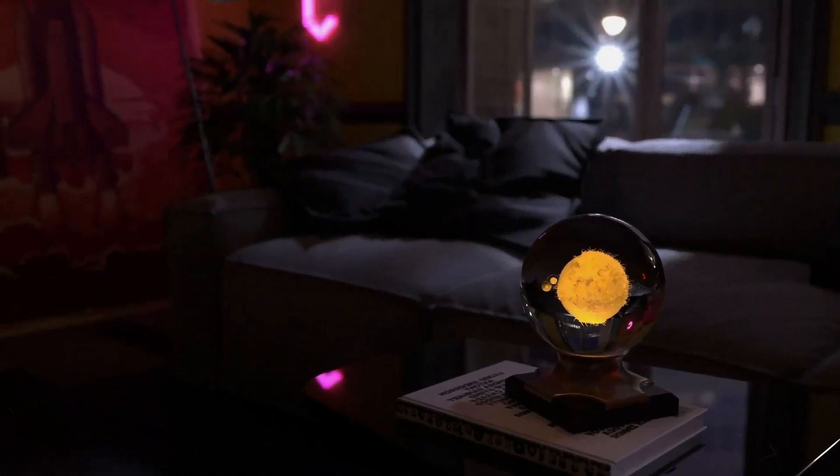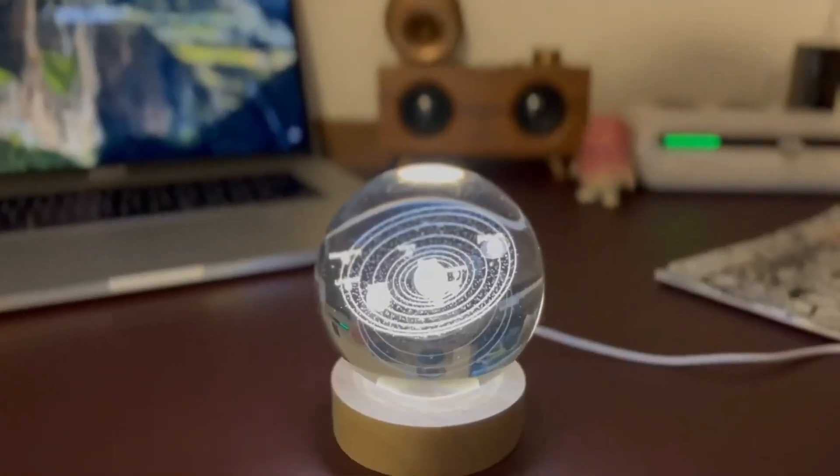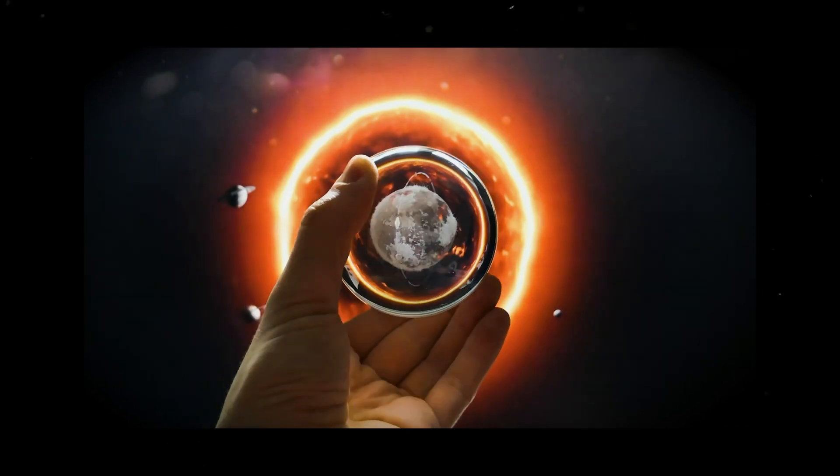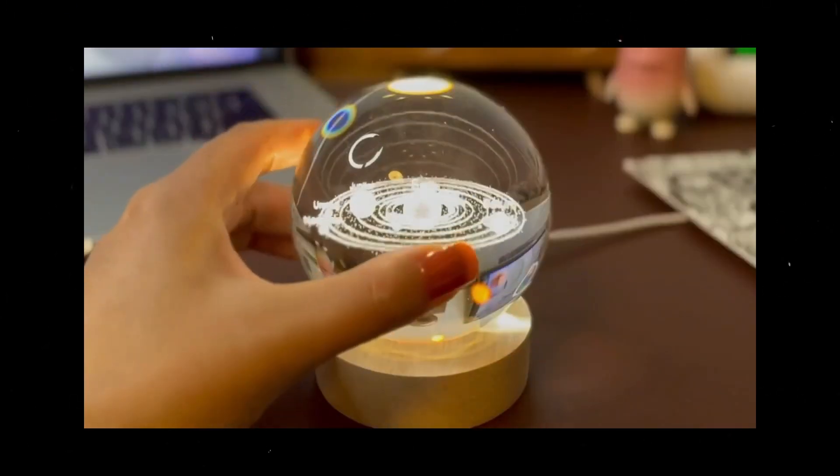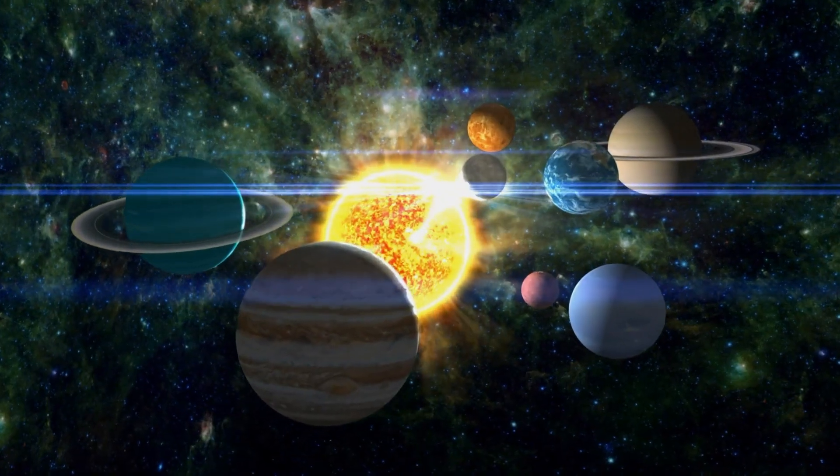This is a sphere that contains a miniature solar system. The planets are made up of different materials, and they orbit the sun in a realistic way. The sphere is both beautiful and educational, and it is a great way to learn about the solar system.